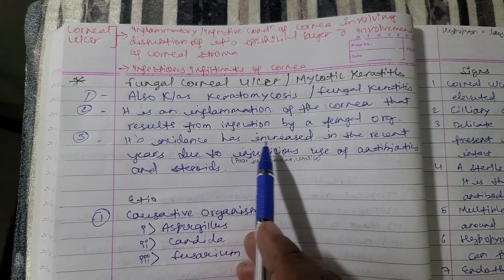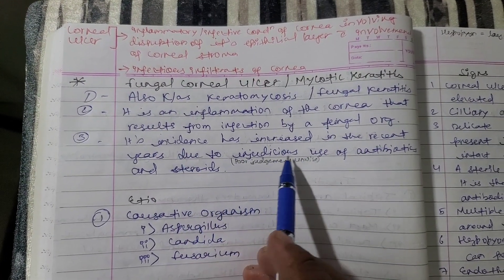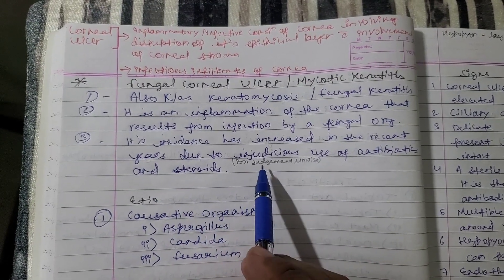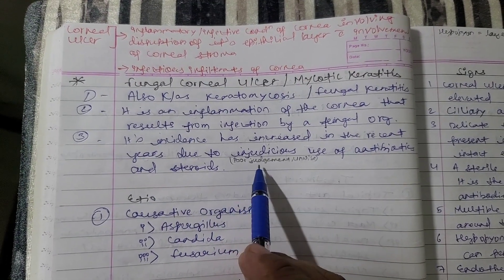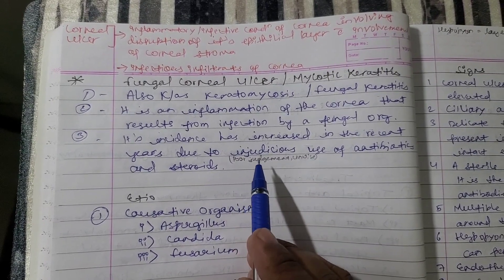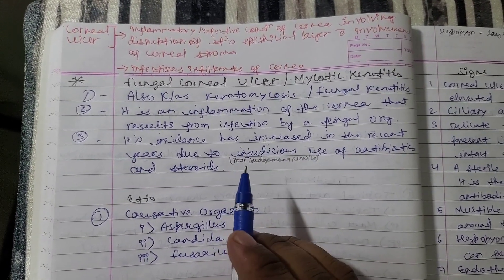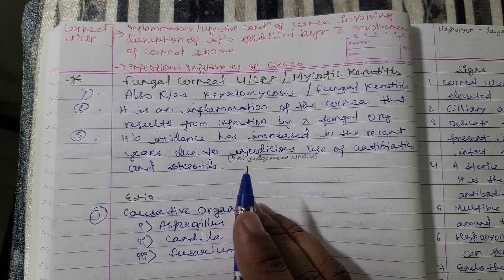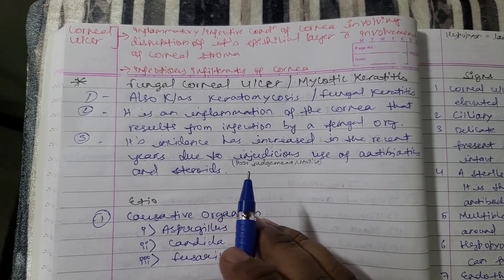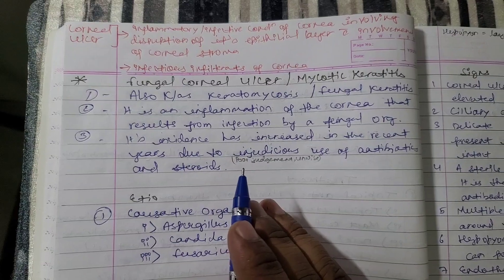Its incidence has increased in recent years due to injudicious use of antibiotics and steroids. Injudicious means poor judgment — giving a drug without knowing if it is appropriate. This causes the body's immunity to become weak, making the body susceptible to infection.